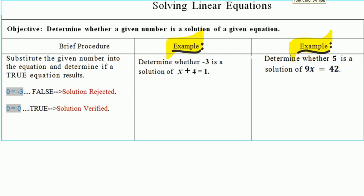Here's the procedure. When you have your solution or given number, you want to substitute it into the original equation and determine whether you're getting a true statement or a false statement. If you get something like zero equal to negative three, you know that is false, and you reject that solution.